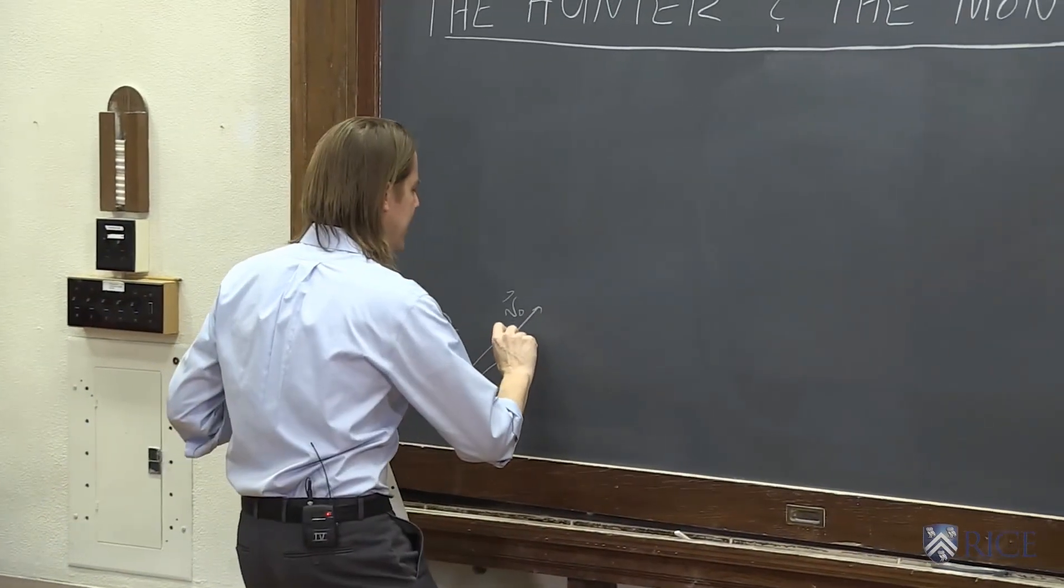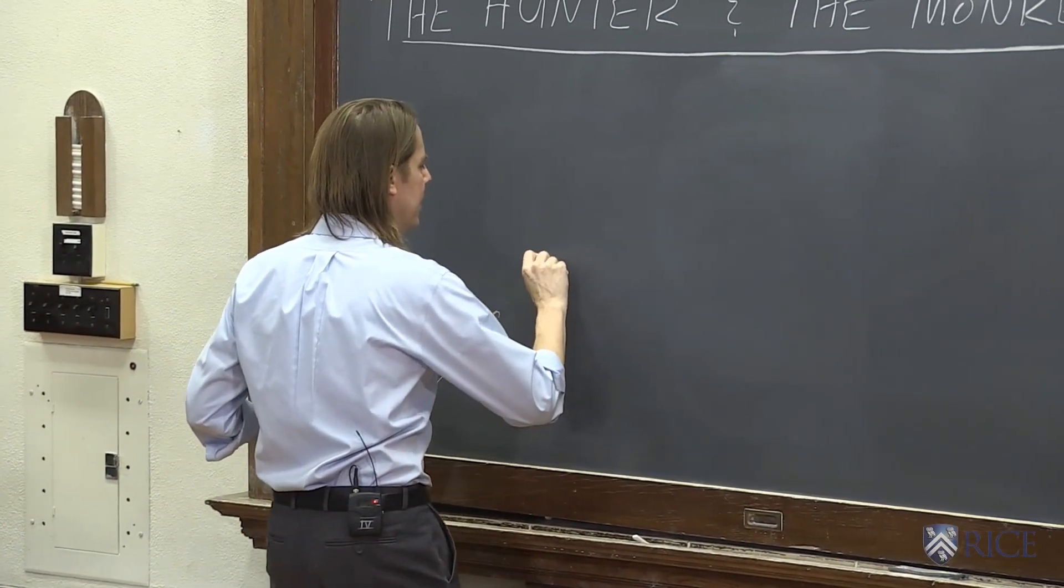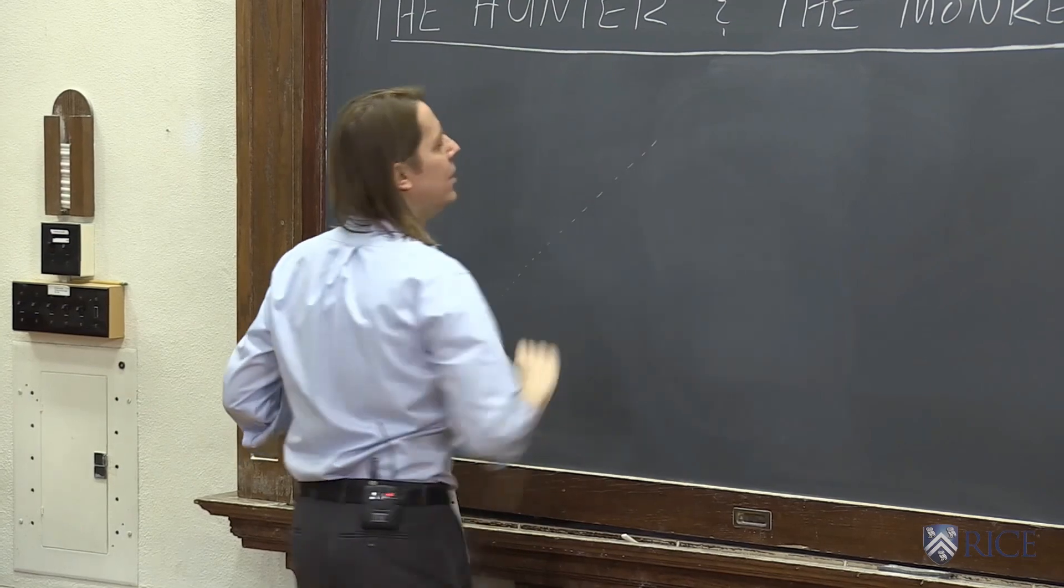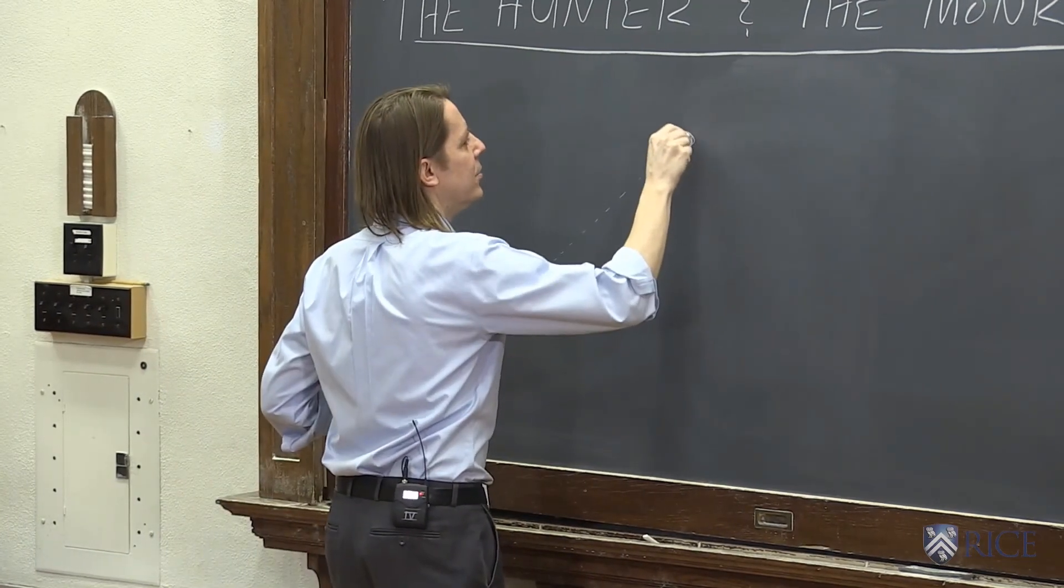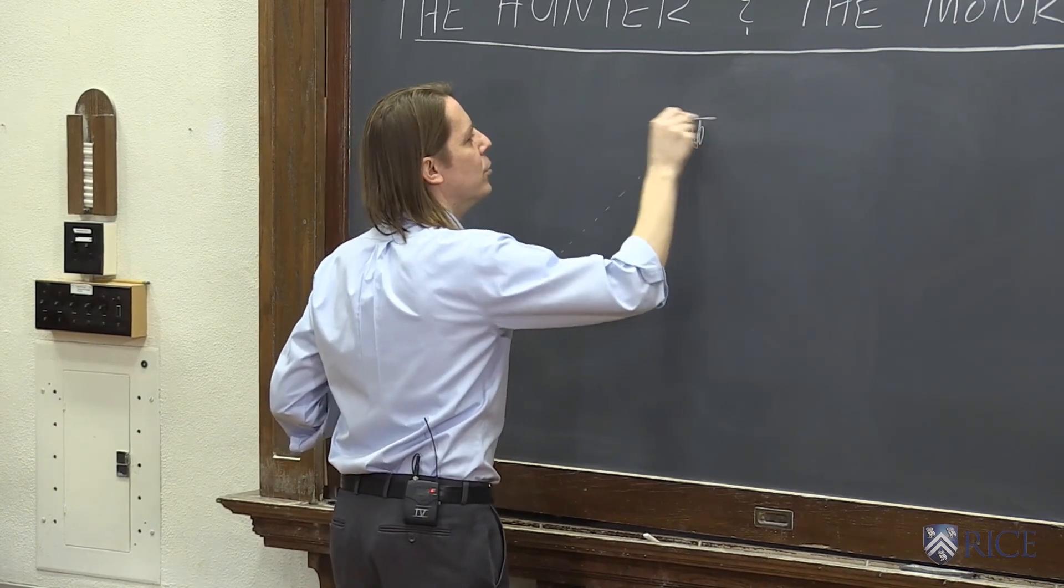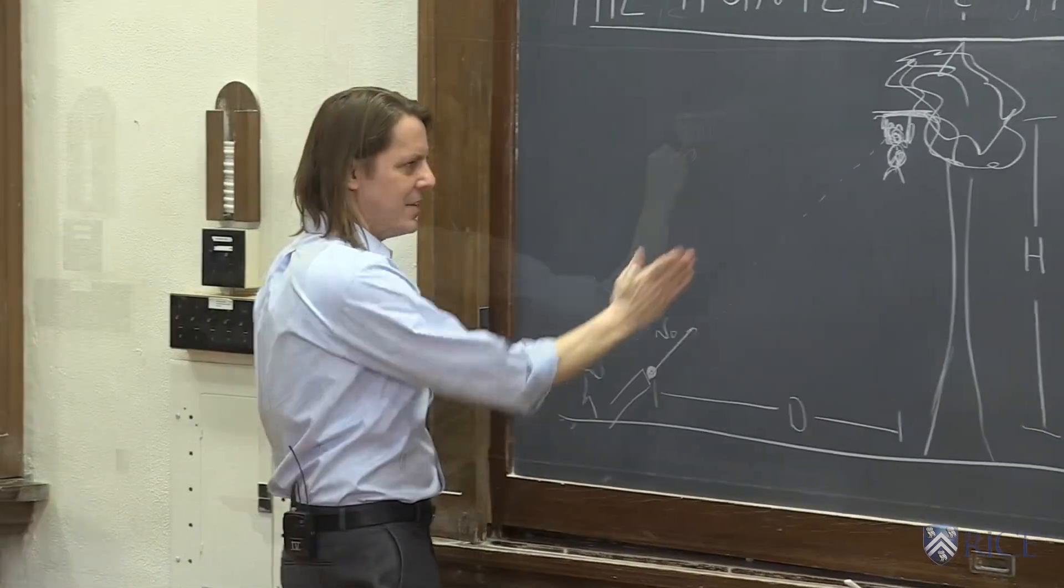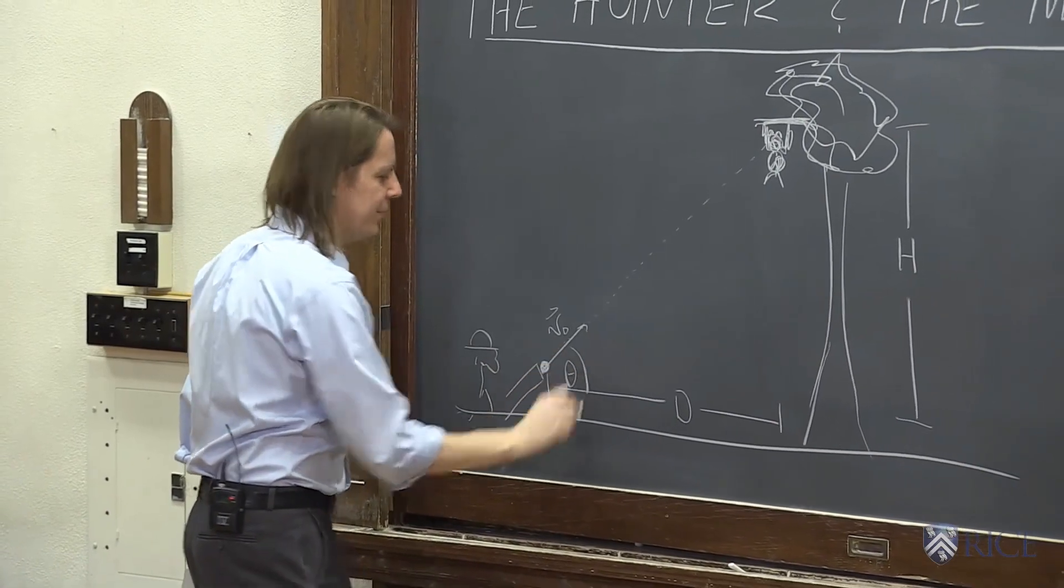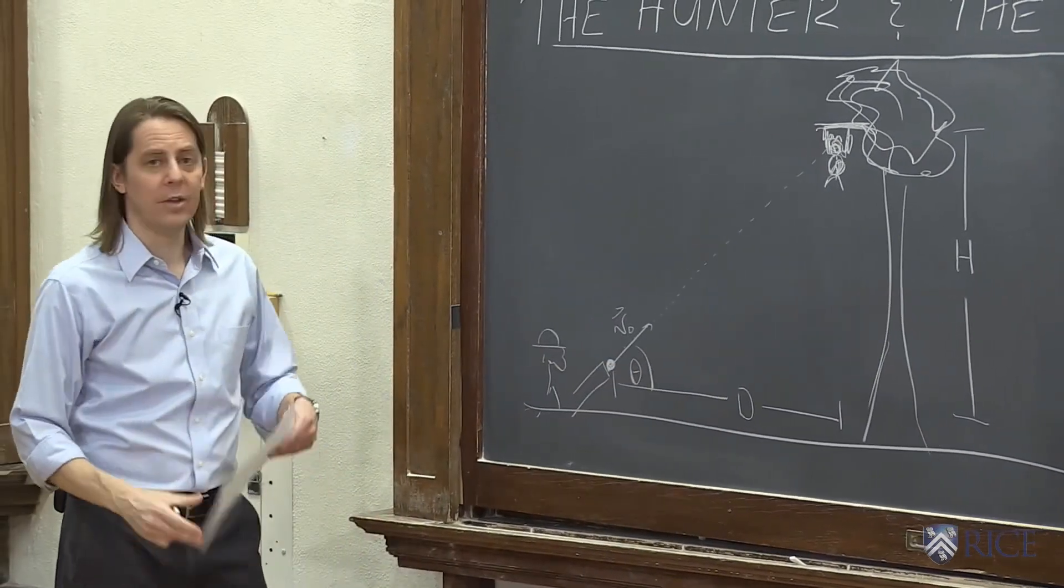And he shoots it and he aims right at a straight line, looking through his sights, right at the monkey. So here's the monkey and it's sort of holding on to a branch. He has aimed his gun where he should hit the monkey. He has it at some angle theta, gives it some velocity.